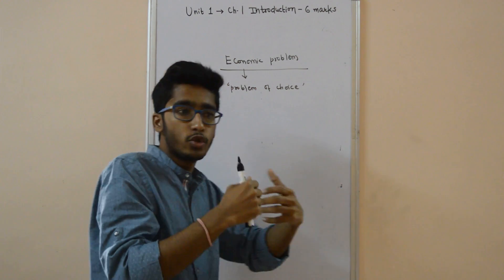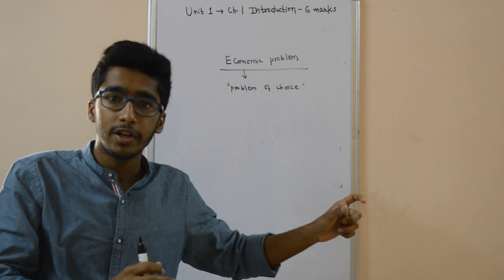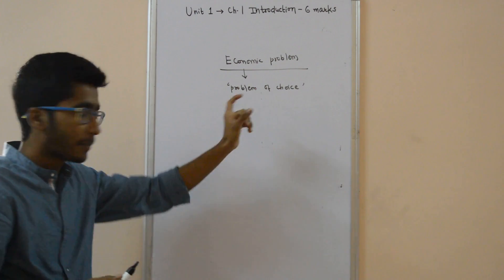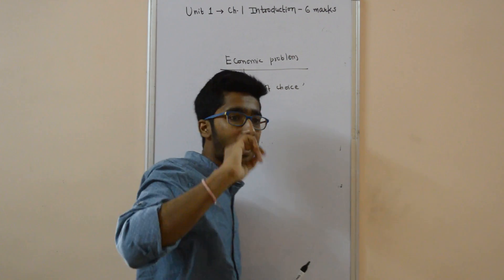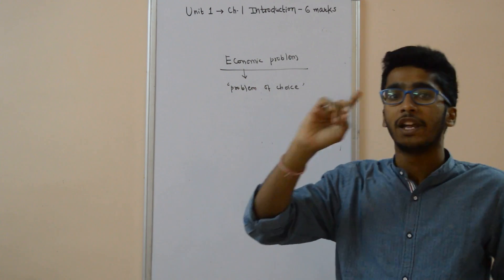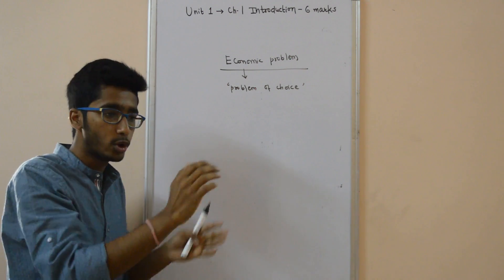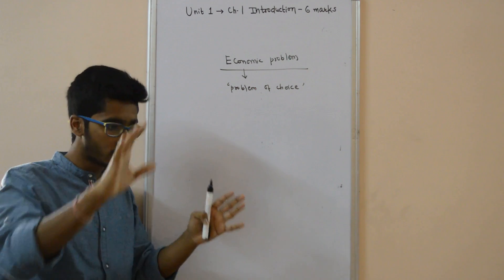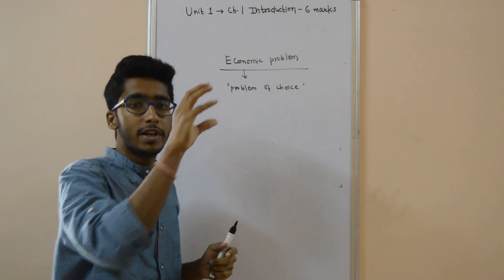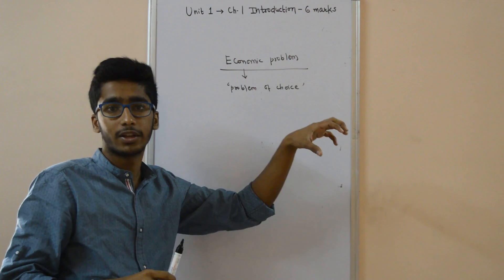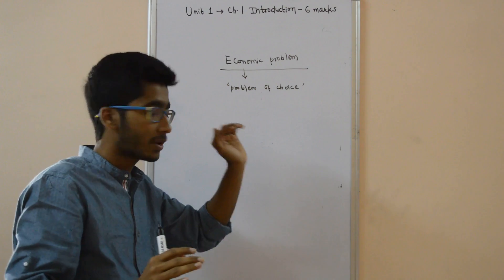We know that our resources are limited, but human wants, human needs, and human desires are unlimited. So how do you put those limited resources towards unlimited uses? If supply is 50 units but demand is 100 units, how effectively do you put those 50 units so that the needs of the people are satisfied? Though you cannot fulfill the needs of all sections of society because resources are limited and wants are unlimited — this is called the problem of choice.